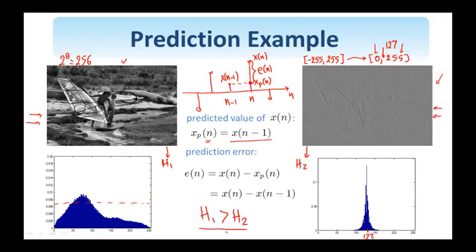And assuming that I have a means to achieve entropy, I have an arithmetic coder, for example, that can come close to entropy, then based on this, I need more bits to encode the original image than the resulting prediction error.